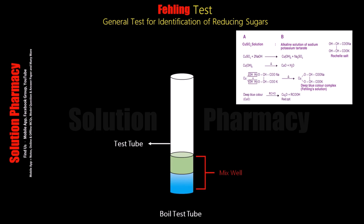Fehling's solution A is a solution of copper sulfate in water, and Fehling's solution B is a solution of potassium hydroxide and sodium potassium tartrate.